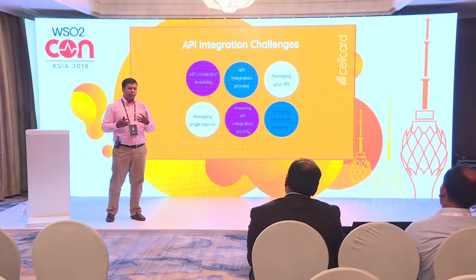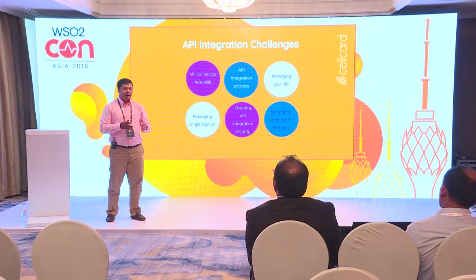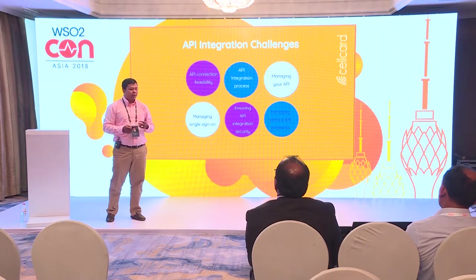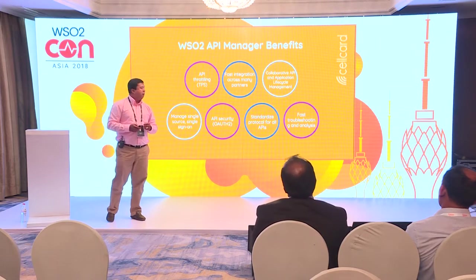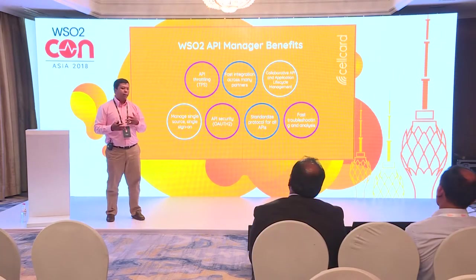We have used WSO2 to replace the provisioning gateway, currently using about 20% of the vendor platform. Regarding benefits: in the API Manager we can control TPS and throttle APIs — for example, I can set that a partner can connect to us at only three TPS per second, so they will not overwhelm our system.